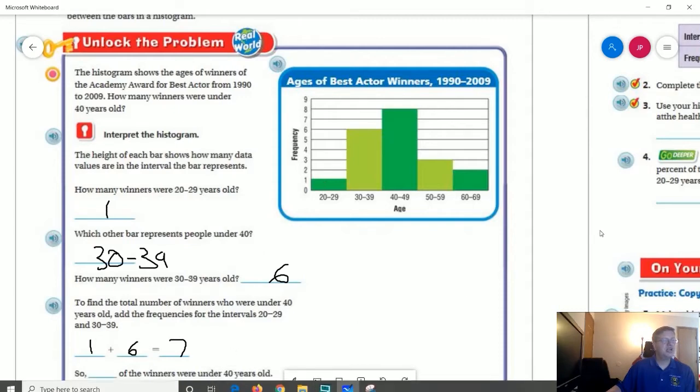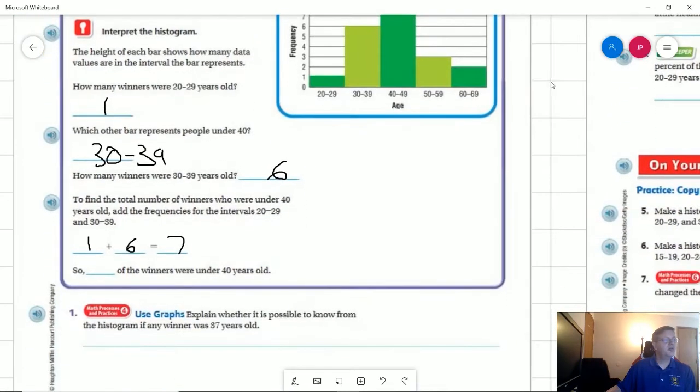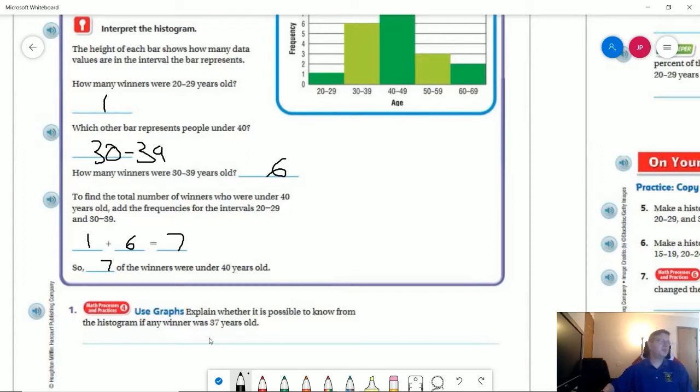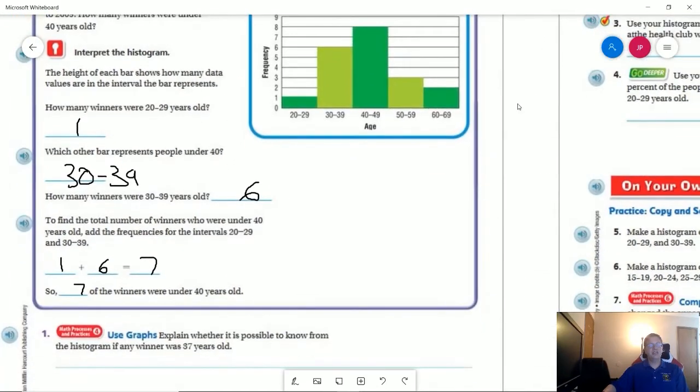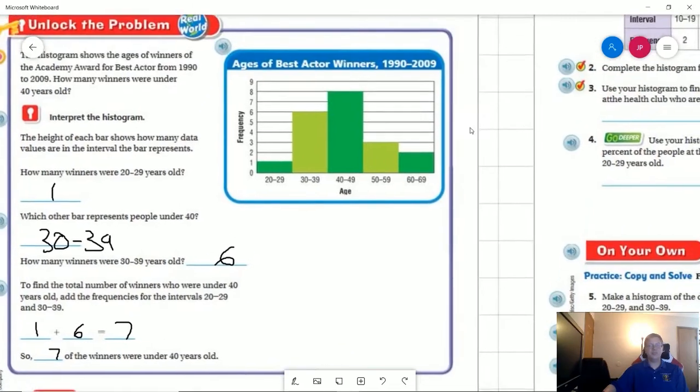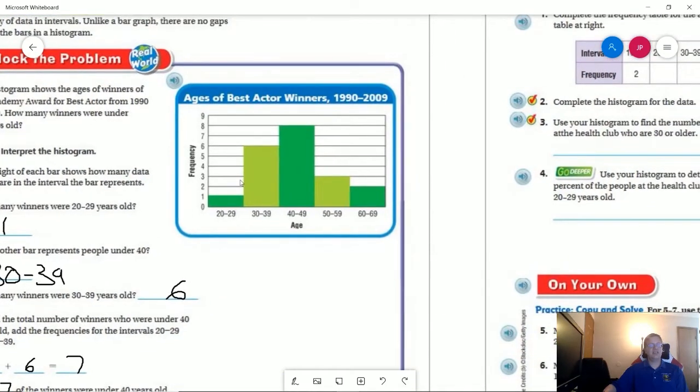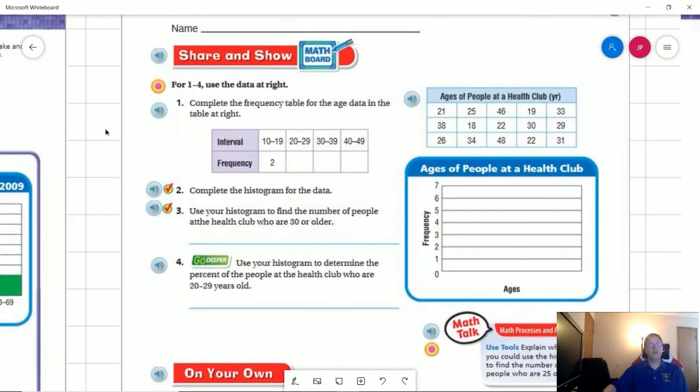Seven of our winners were under 40 years old. If we take a look at number one real quick: is it possible to know from the histogram if any winner was exactly 37 years old? No because we do not have the specific data. Now it could be reasonable to guess that one of them could have been 37 years old because we have six different winners, but they all could have been the exact same age and it could have been a different age than the age they're asking for. We don't know.